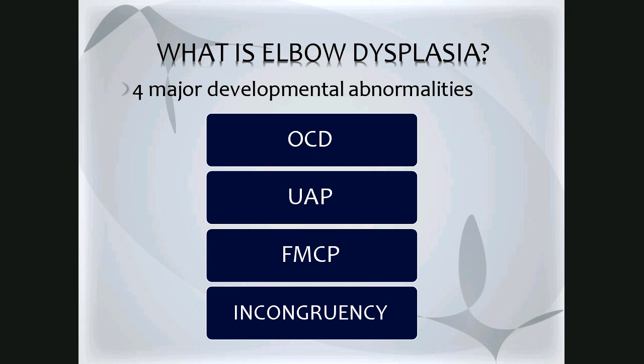Elbow dysplasia is a polygenic and multifactorial progressive condition in certain dog breeds. It consists of four major developmental abnormalities. Now is a good time to review your notes on osteochondrosis and OCD, because all four of these developmental abnormalities are blanketed under osteochondrosis. The four major abnormalities are OCD or osteochondrosis dissecans, ununited anconeal process, fragmented medial coronoid process, and elbow joint incongruency.